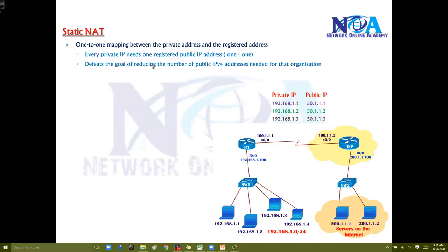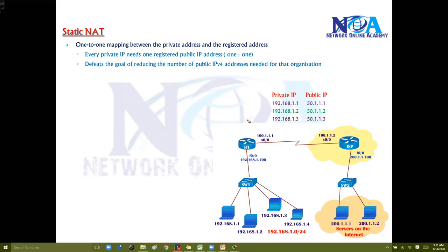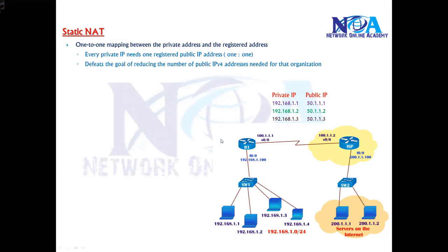The problem with static NAT is it's not going to meet the actual requirement of NAT. Generally we use NAT to reduce the number of public IPs required, but that cannot be achieved here. Because if you have 200 users who need to be translated to access the internet and you use static NAT, then you need 200 public IPs — so it's not going to meet that requirement of reducing public IPs.